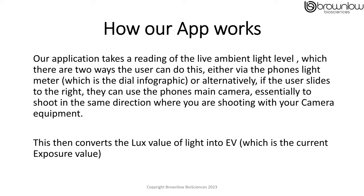Our application takes a reading of the live ambient light level, which there are two ways the user can do. Either via the phone's light meter, which is the dial infographic, or alternatively, if the user slides to the right, they can use the phone's main camera to essentially shoot in the same direction where you are shooting with your camera equipment. This then converts the lux value of the light into EV, which is the current exposure value.